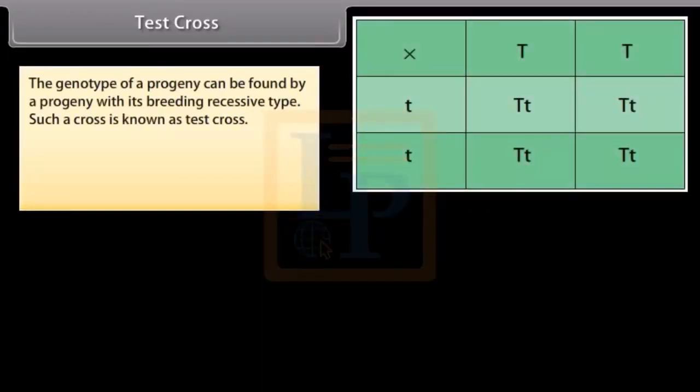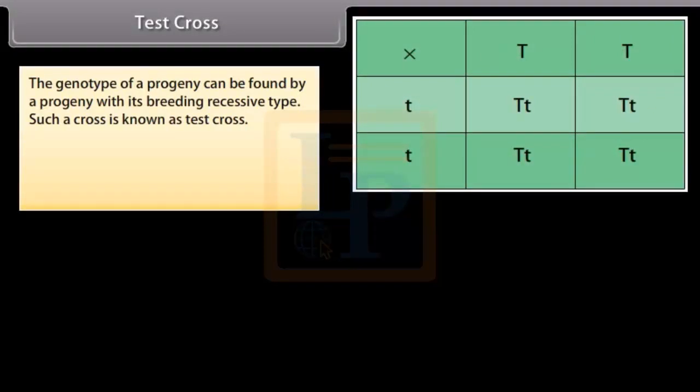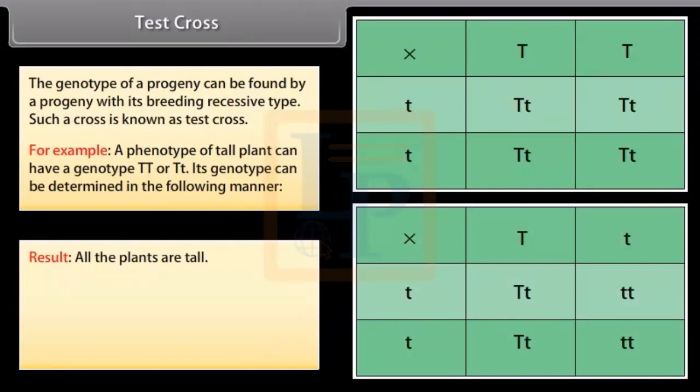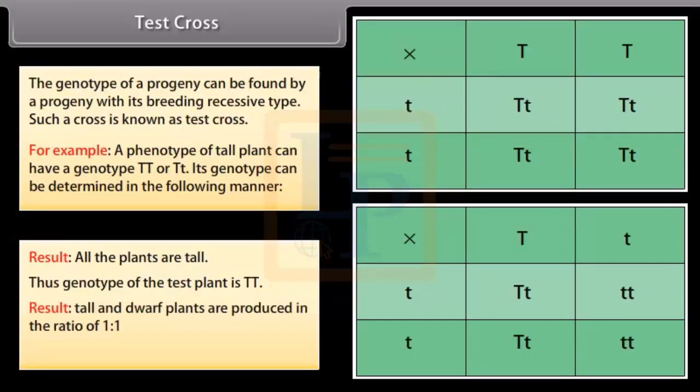Test cross. The genotype of a progeny can be found by crossing a progeny with breeding recessive type. Such a cross is known as test cross. For example, a phenotype of tall plant can have a genotype TT or Tt. Its genotype can be determined in the following manner. In the first case, all the plants are tall thus the genotype of the test plant is TT. In the second case, tall and dwarf plants are produced in the ratio of 1:1, thus genotype of test plant is Tt.